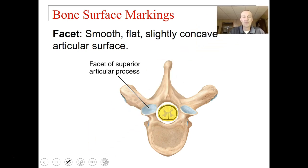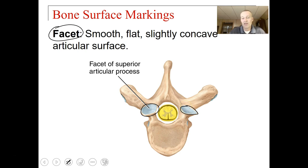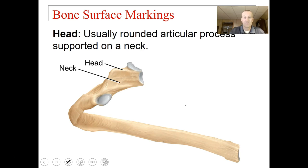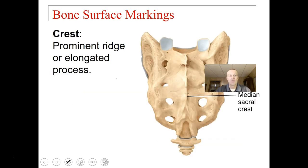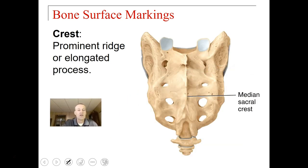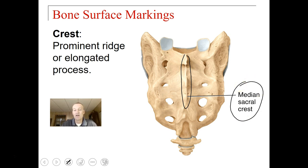A facet is a smooth, flat, slightly concave articular surface. You can see facets here and here on a vertebra — this is where vertebrae articulate with other vertebrae. A head is usually a rounded articular process supported by a neck, as you can see with the head and neck of a rib. A crest is a prominent ridge or elongated process, such as the medial sacral crest on the sacrum.